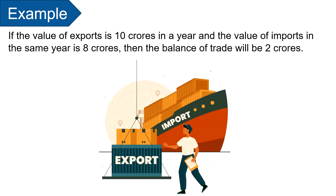Let us understand this with an example. If the value of exports is 10 crores in a financial year and the value of imports in the same financial year is 8 crores, then the balance of trade will be 2 crores. It reflects a trade surplus as exports are greater than imports, which is good for the economy. But if the imports and exports made to or by the country tally, then this situation is called trade equilibrium. Contrastingly, if the value of imports exceeds the value of exports, then there will be a trade deficit, which can have economic implications.